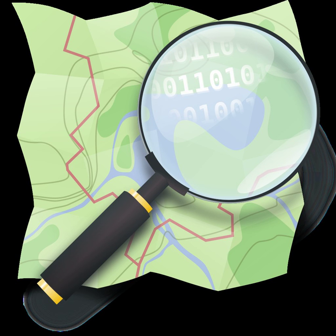Map data is collected from scratch by volunteers performing systematic ground surveys using tools such as a handheld GPS unit, a notebook, digital camera, or a voice recorder. The data is then entered into the OpenStreetMap database. Mapathon competition events are also held by OpenStreetMap team and by non-profit organizations and local governments to map a particular area. The availability of aerial photography and other data from commercial and government sources has added important sources of data for manual editing and automated imports. Special processes are in place to handle automated imports and avoid legal and technical problems.